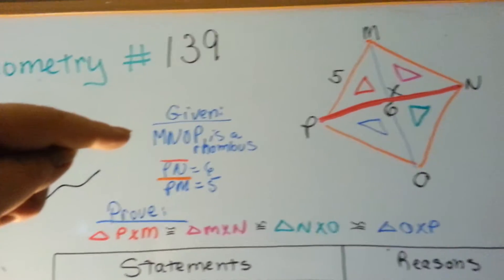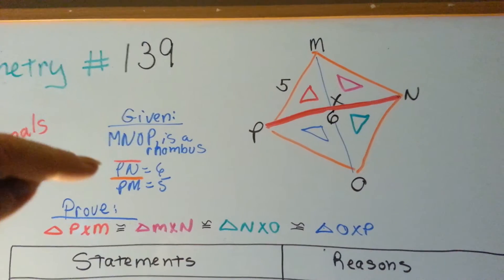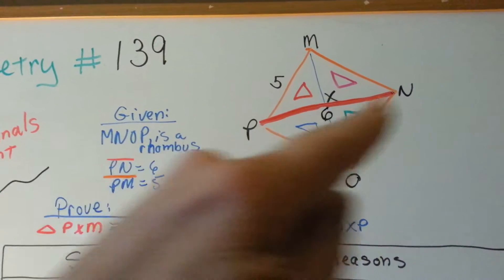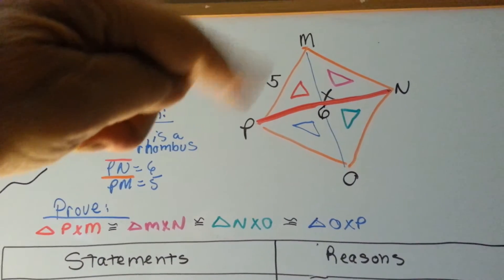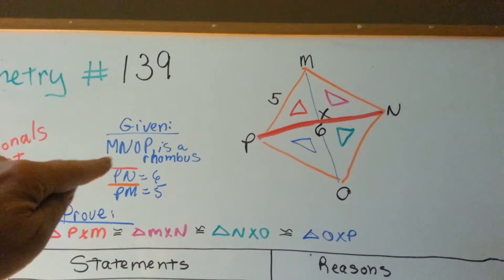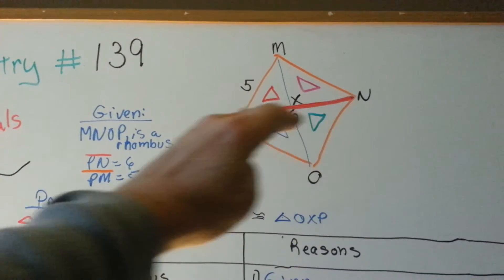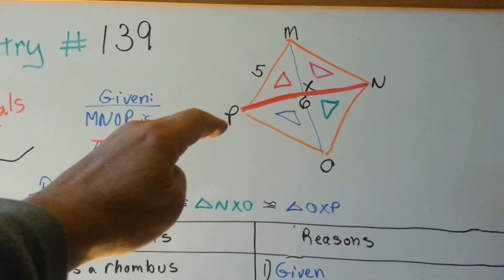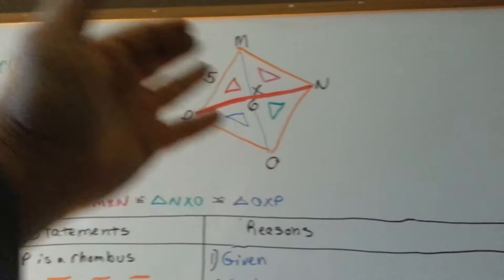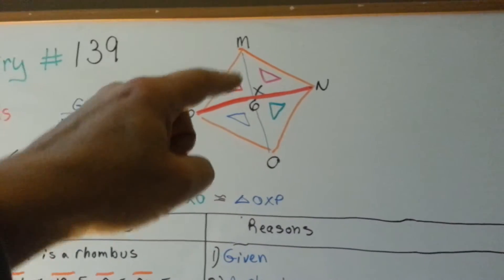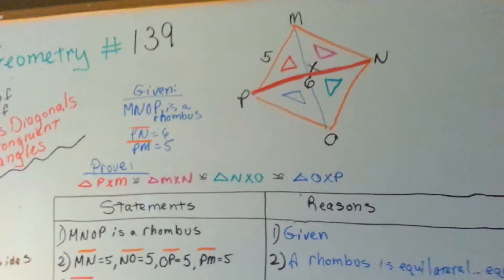It's given that MNOP is a rhombus, and that the line PN is 6 and PM is 5. Well that right here, that PN was 6, was a hint to me that I needed to draw a diagonal. So I drew a second one because I just thought, what the heck, but I didn't make it as dark. So I knew I was going to deal with this diagonal, so I put that in.